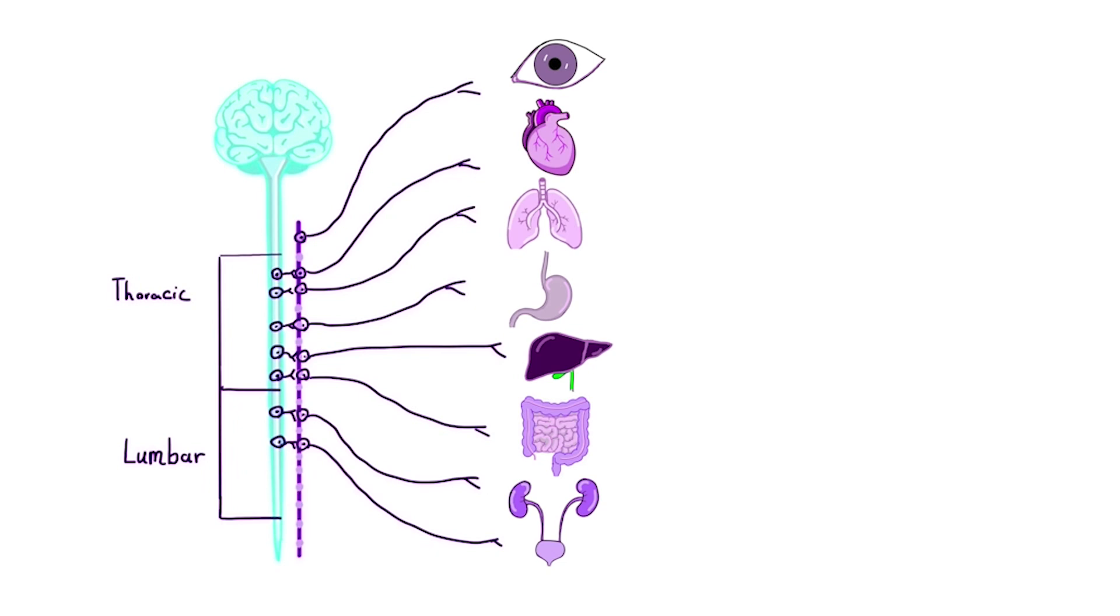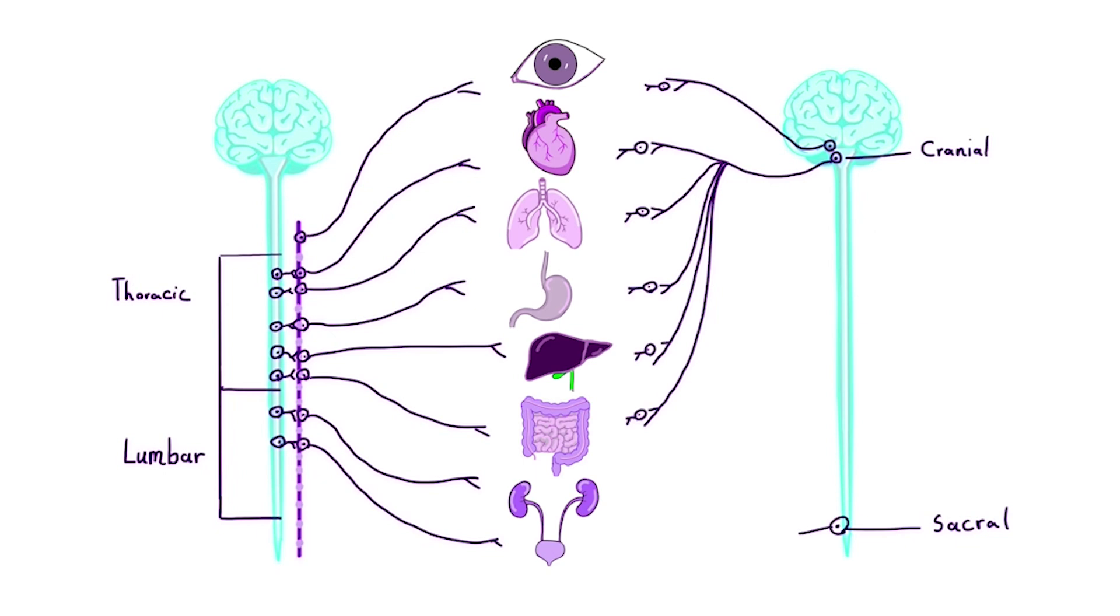Now let's switch over to the parasympathetic system. Parasympathetic nerves start from the brain and the sacral region and travel as long preganglionic nerves. These then synapse with shorter postganglionic nerves, which finally connect to the target organs. And which organs do they reach? Well, pretty much the exact same ones as the sympathetic system. Which makes sense because these two systems have to stay coordinated, like two sides of a scale.